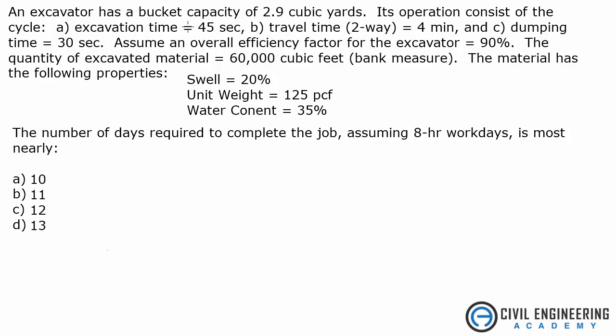The first thing we need to do is look at all these times and figure out one cycle is going to be all these times added up. One cycle is going to be 45 seconds for excavation, and 4 minutes, which is equal to 240 seconds for travel. That includes two ways, so you're not going to double those. And dumping time is 30 seconds. That gives me 315 seconds, which is also equal to 5.25 minutes for one cycle.